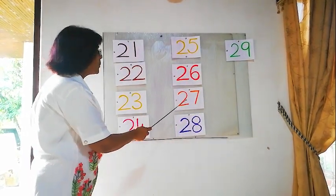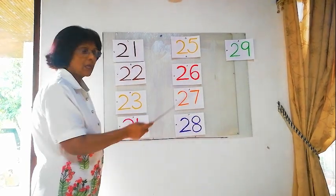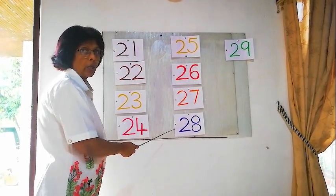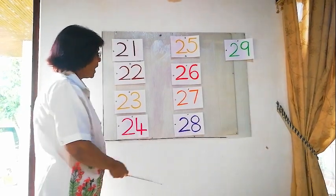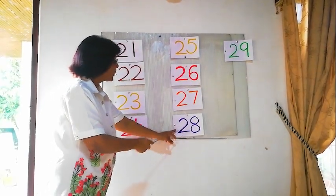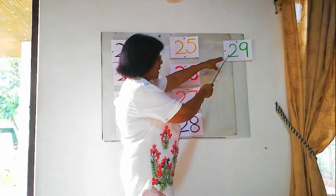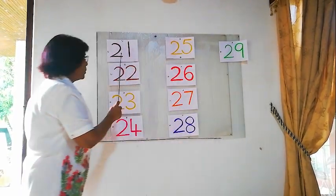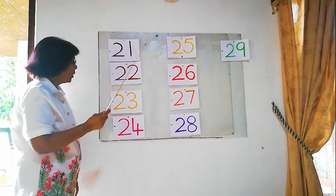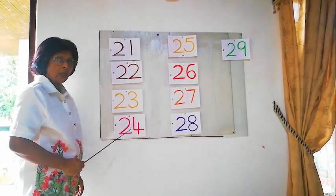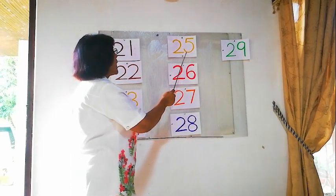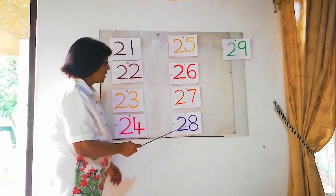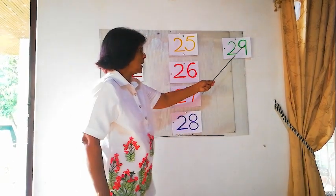After 27, what's the next number? 28. After 28, what's the number? 29. 29. Here: 21, 22, 23, 24, 25, 26, 27, 28, 29.